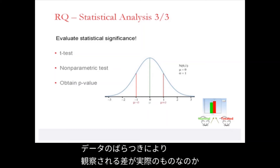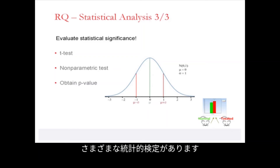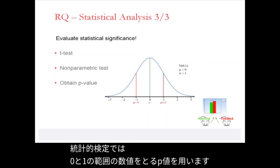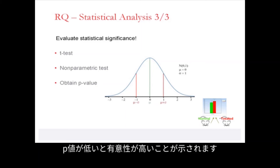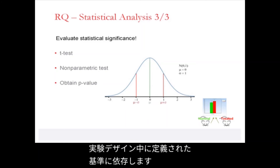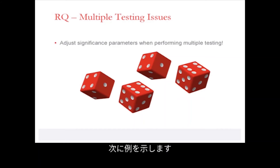Variability in our data calls into question whether the difference we observe is real or just due to random variation. To test the significance of an observed difference, we perform a statistical test. Different types of statistical tests are available, and they produce a p-value between 0 and 1 that is an indicator of test significance. A lower p-value indicates higher significance, but the precise cut-off for significance depends on the criteria defined during the experimental design.